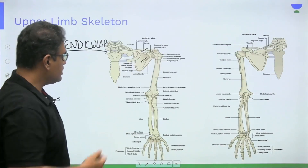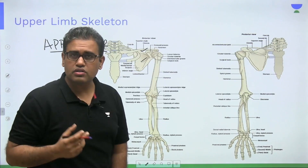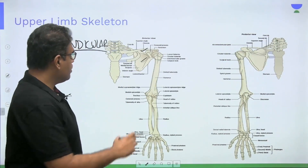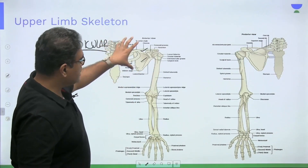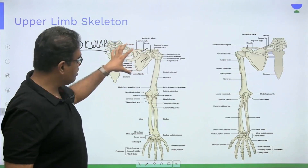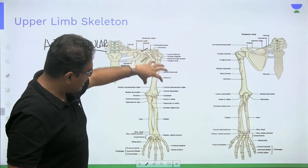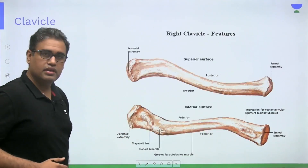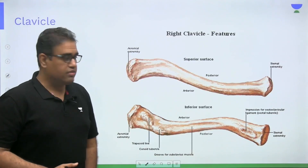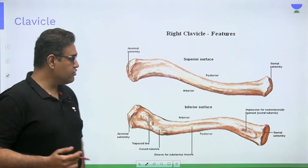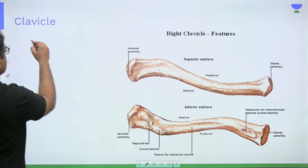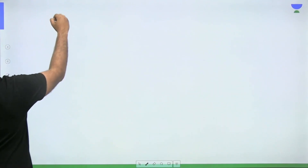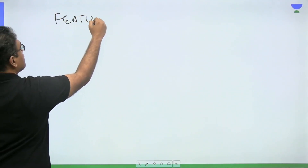Now let us see the details of each bone. When studying the upper or lower limb, we go from proximal to distal. We will start with the bones around the shoulder or pectoral or scapular region and slowly proceed to the arm, forearm, and hand. Let us start with the first bone, the clavicle. Important features of the clavicle: it is a long bone, but it is lying horizontally — that is the specialty of it.